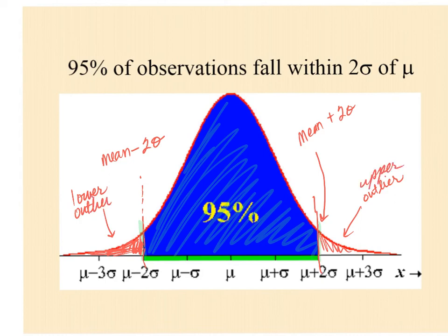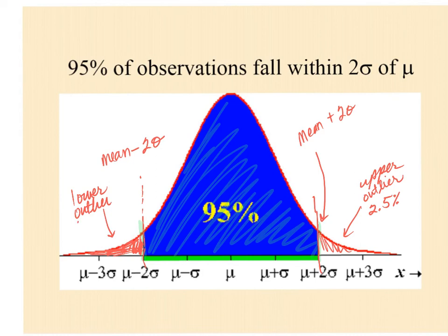What percent of data are upper outliers? If 95% is in the middle, how much is left in the two tails? Five percent total — so that makes 2.5% in each tail. If you are in the top 2.5% of your class, you're considered an outlier. Similarly, the bottom 2.5% on the lower end are also considered outliers.